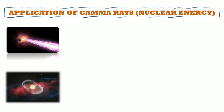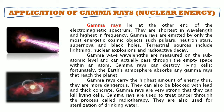Lastly, gamma rays lie at the end of the electromagnetic spectrum — they are the shortest in wavelength and highest in frequency. Gamma rays are emitted by energetic cosmic objects such as pulsars, neutron stars, supernovae, and black holes; terrestrial sources include lightning, nuclear explosions, and radioactive decay. Gamma wavelengths are measured at the subatomic level and can pass through the empty space within an atom. They can destroy living cells, but fortunately the Earth's atmosphere absorbs gamma rays that reach the planet. They carry the highest amount of energy and are more dangerous, but can be blocked with lead and thick concrete. Gamma rays are used to treat cancer through radiotherapy and for sterilization of drinking water.